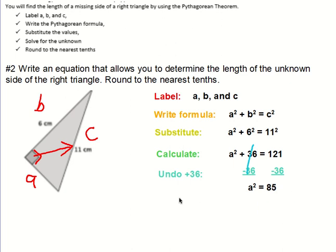Next step, take the square root of both sides. So take the square root of both sides. And here's what it looks like. So we need to take our calculator tool and type in the square root of 85. The square root of A squared is A. And the square root of 85, you do get a decimal number.